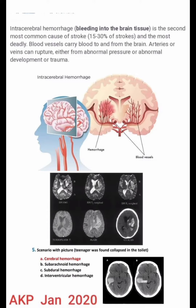Look at the image — we are seeing intracerebral hemorrhage with hemorrhage at the blood vessels. The images below also show the different changes that occur in intracerebral hemorrhage in the brain.